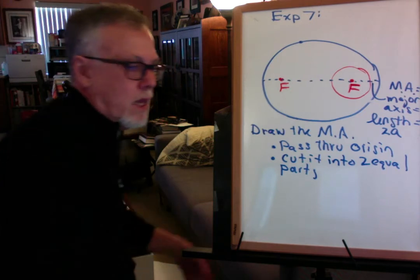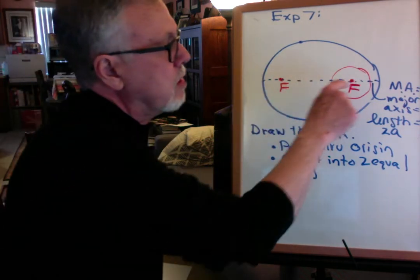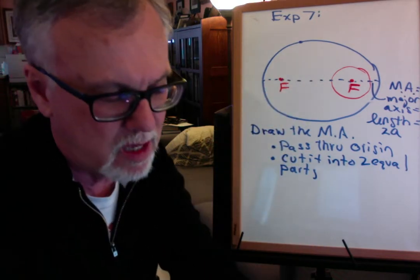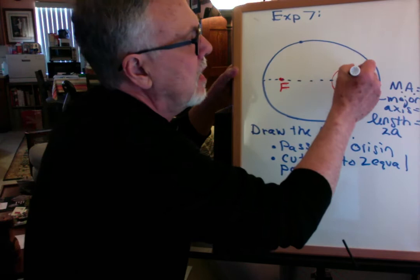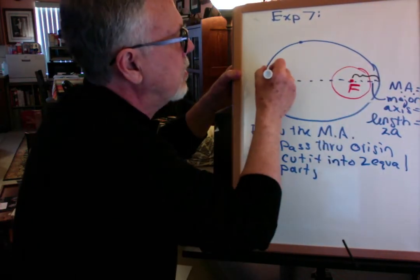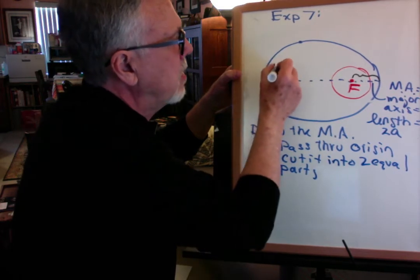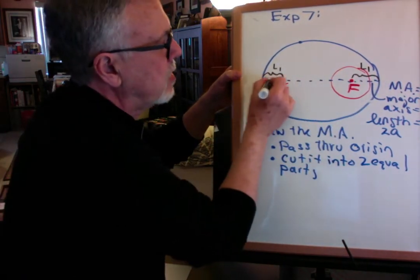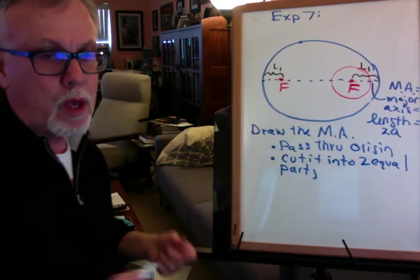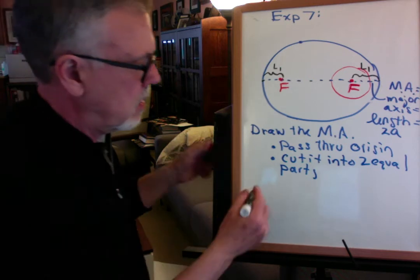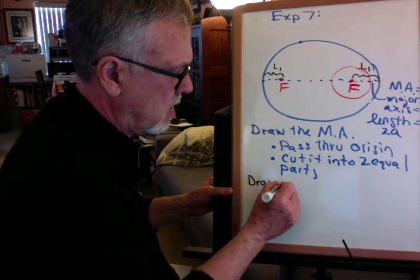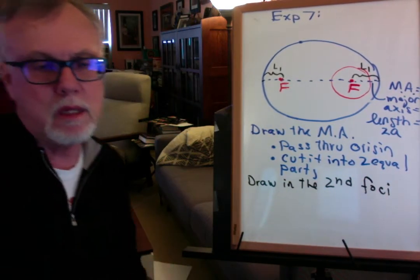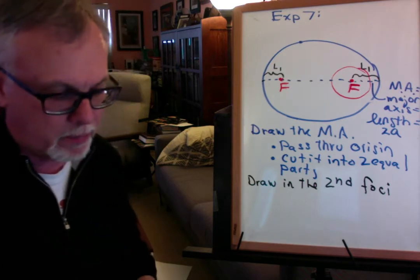Once you've drawn the major axis, where do you draw the actual second foci? One thing I know is that the length from the orbit to the first focus has to be equal to the length from the orbit to the second focus. So once you draw the major axis, measure with a ruler that length and measure from the opposite point over — those should be equal. Then you draw in the second foci, which happens to be in empty space. But every ellipse needs two foci.